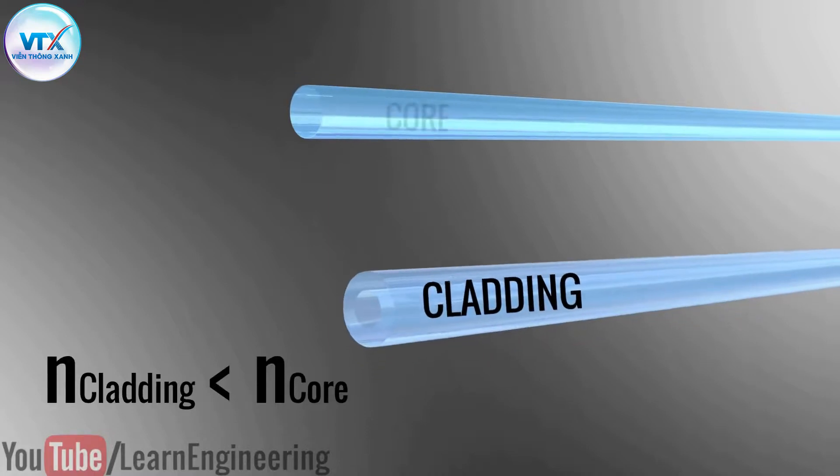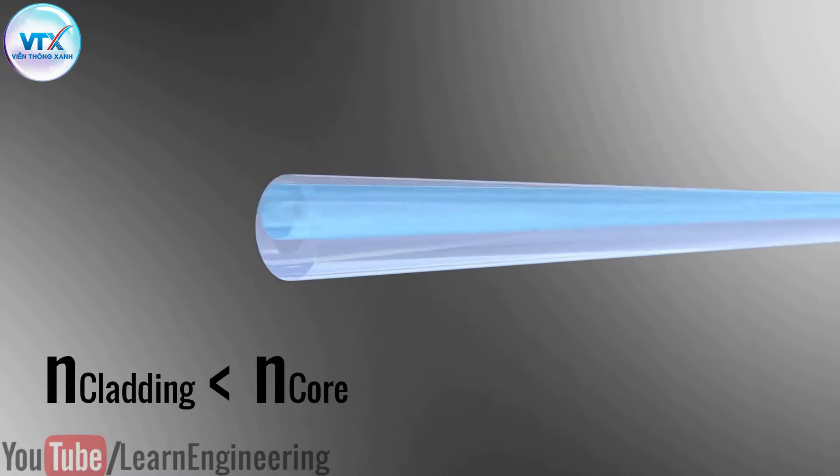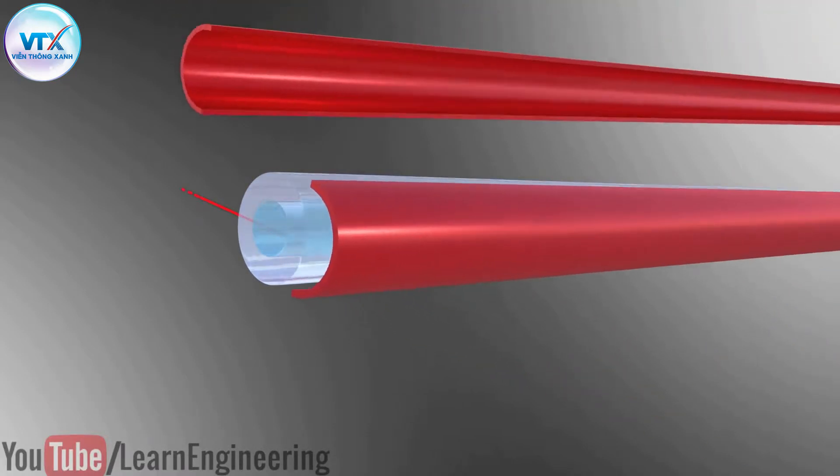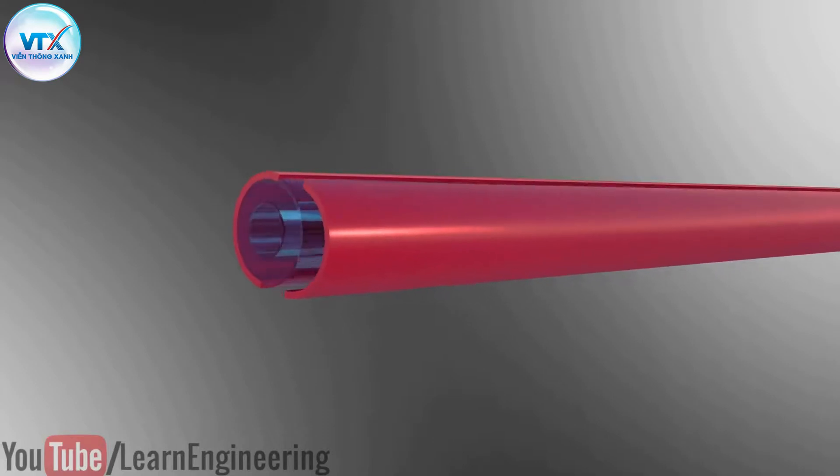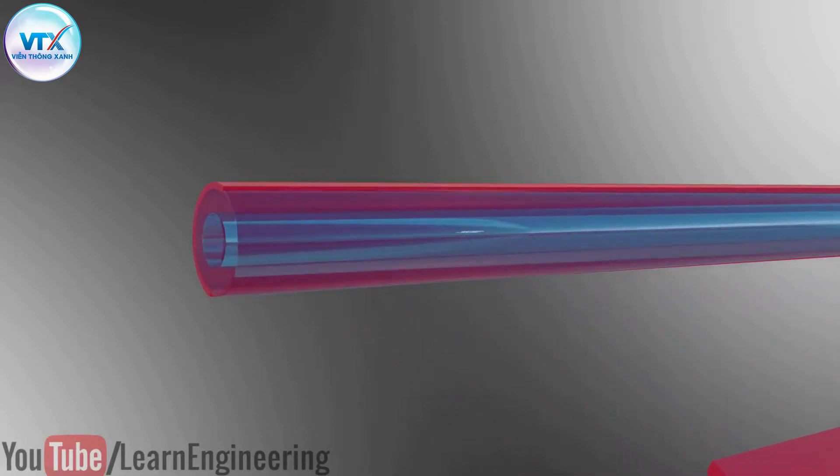This way total internal reflection will happen and we will be able to use a protective layer. Both the core and the cladding use silica as their base material. The difference in the refractive index can be achieved by adding different types of dopants.